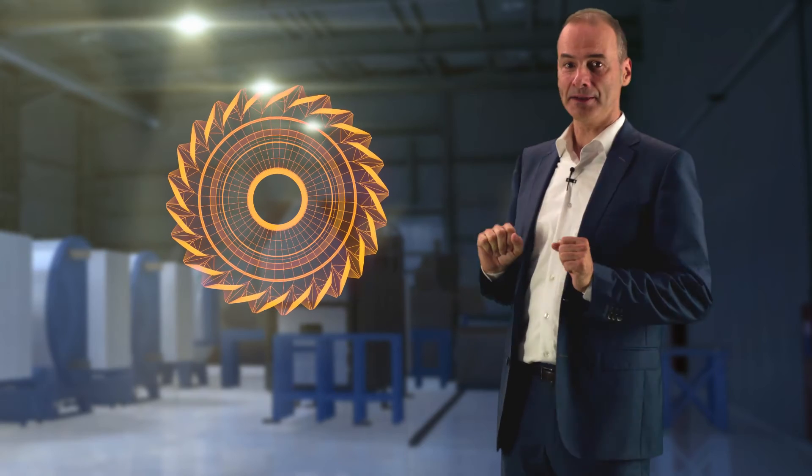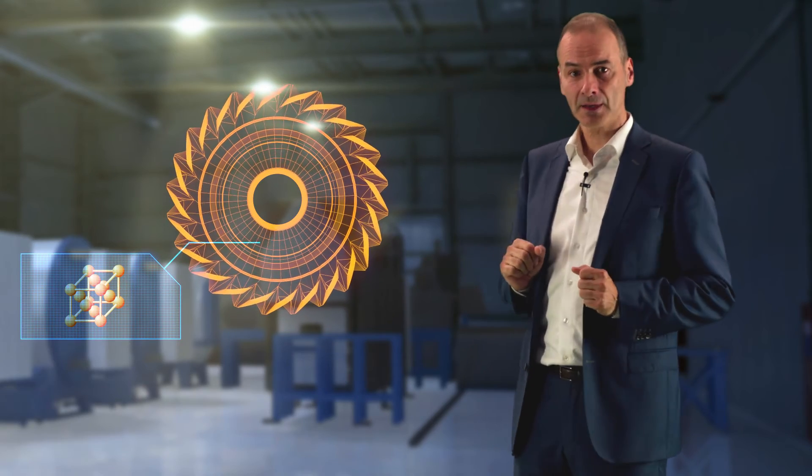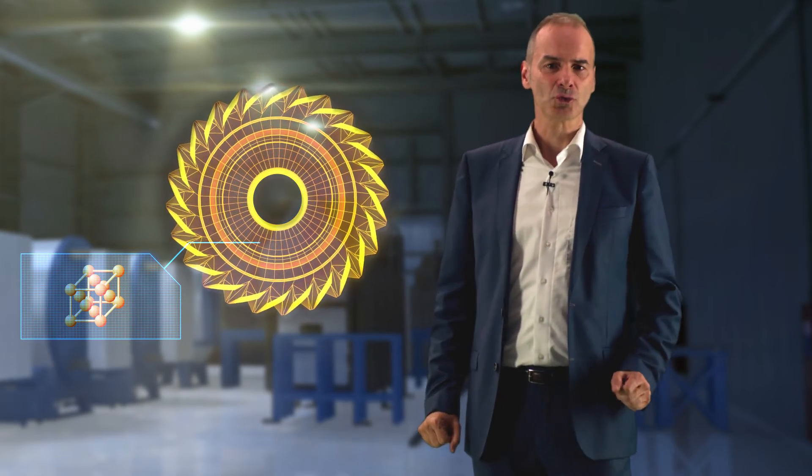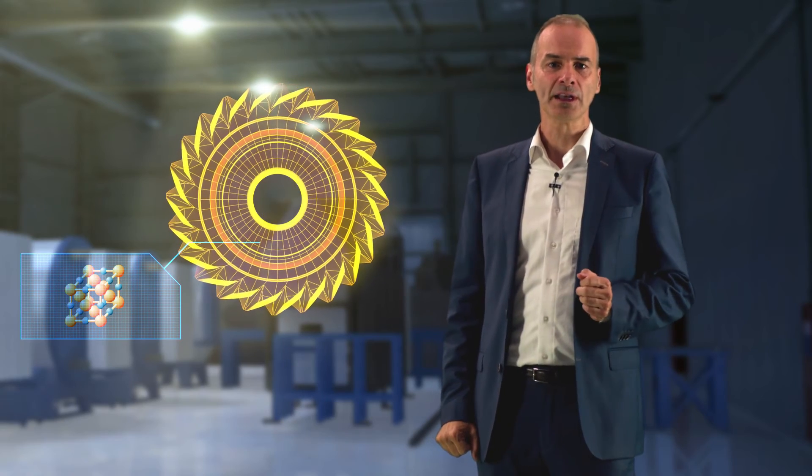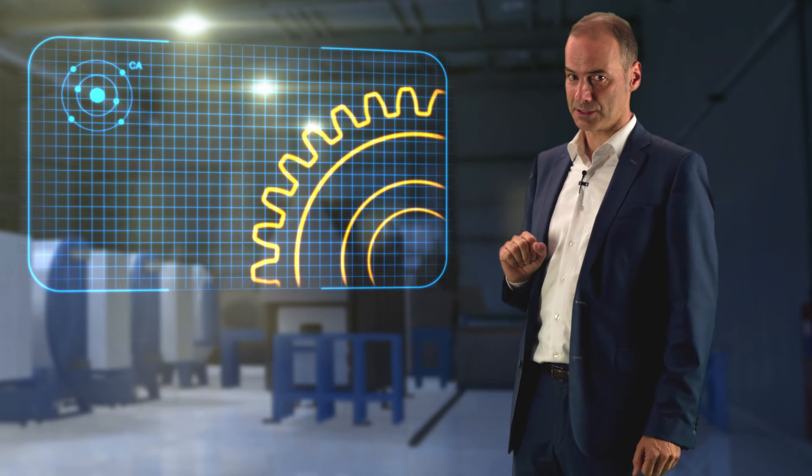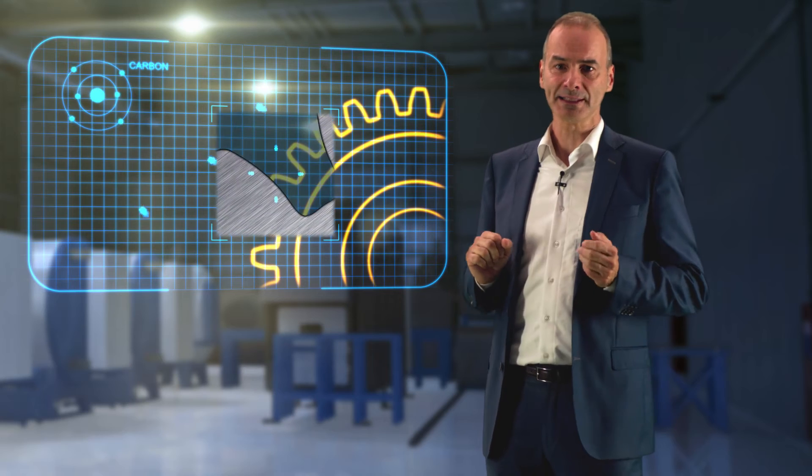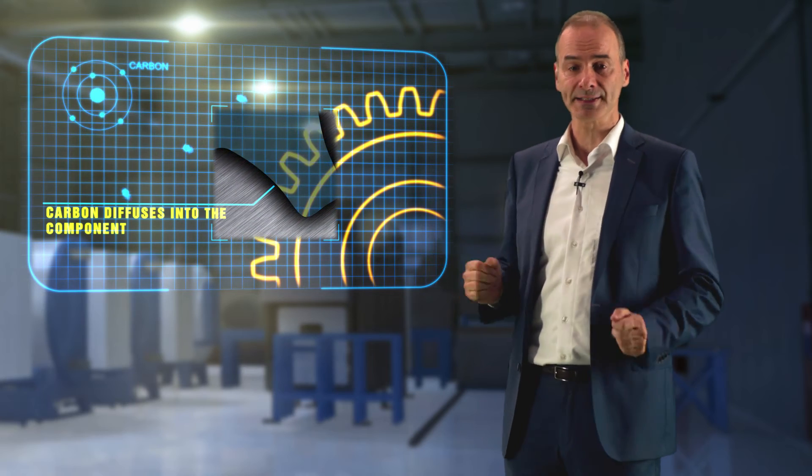Let's take a closer look at what has changed inside the component due to the various processes performed. The heating has changed the lattice structure of the component from the basic structure to that of the austenitic state. Through the AVAC process, carbon is now stored in the material. Due to high pressure gas quenching, the component has been transformed into the martensitic state.